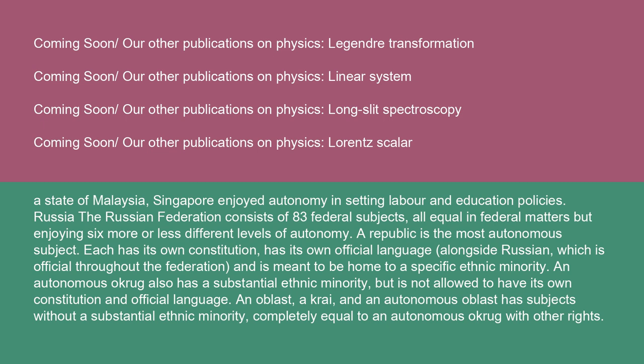Russia: the Russian Federation consists of 83 federal subjects, all equal in federal matters, but enjoying six more or less different levels of autonomy. A republic is the most autonomous subject — each has its own constitution, has its own official language alongside Russian, which is official throughout the federation, and is meant to be home to a specific ethnic minority. An autonomous okrug also has a substantial ethnic minority, but is not allowed to have its own constitution and official language. An oblast, a krai, and an autonomous oblast are subjects without a substantial ethnic minority, completely equal to an autonomous okrug with other rights. A federal city is a major city that functions as a separate region.